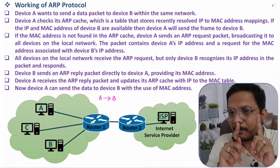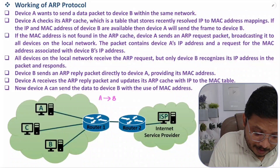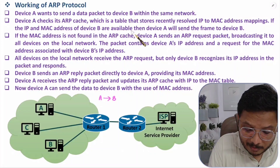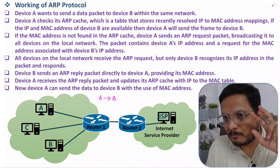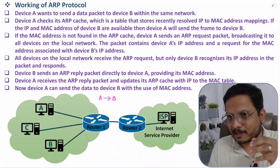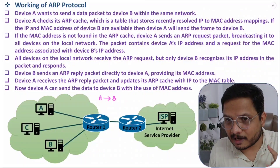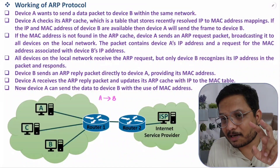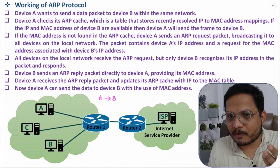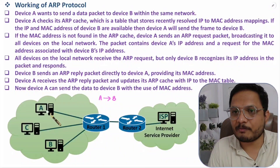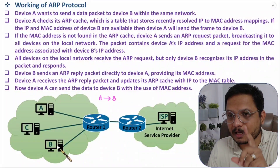If the IP and MAC address of device B are already available in device A's ARP cache, then device A can directly forward the frame to device B using the MAC address. But if device A does not have the MAC address of device B, then it will use ARP protocol to obtain it.